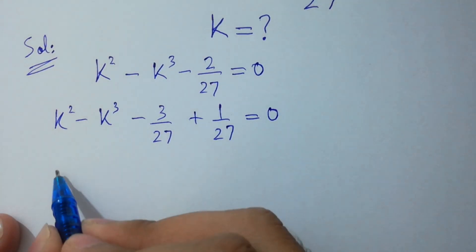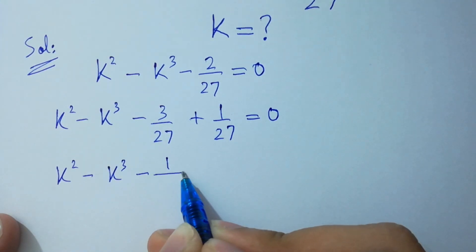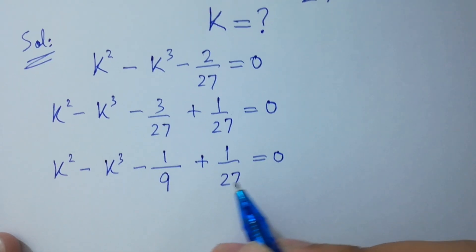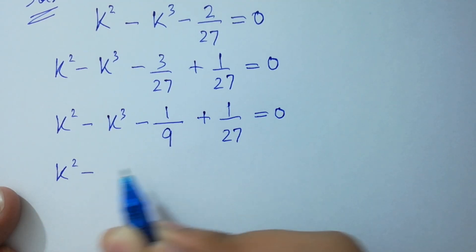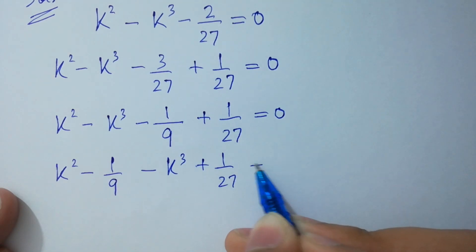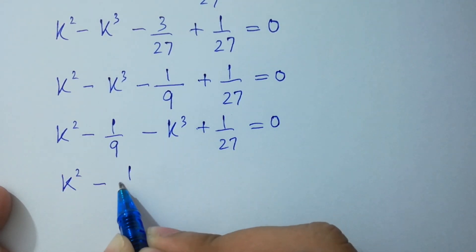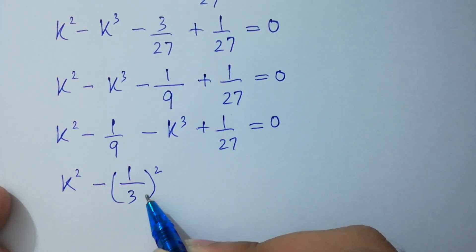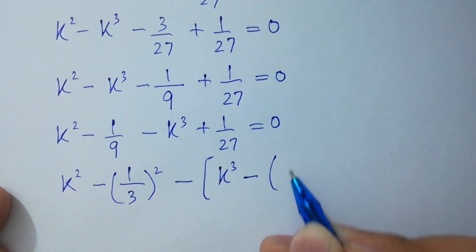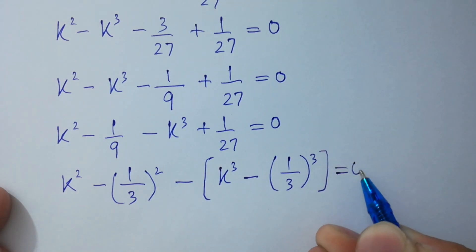k squared minus k cubed minus 3 times 1 over 3 times 9 is 27, plus 1 over 27, equal to 0. So k squared minus 1 over 9 minus k cubed plus 1 over 27 equal to 0. It will be equal to k squared minus 1 over 3 whole squared, because 3 squared equals 9, minus k cubed plus minus 1 over 3 cubed, because 3 cubed equals 27, equal to 0. Very simple.